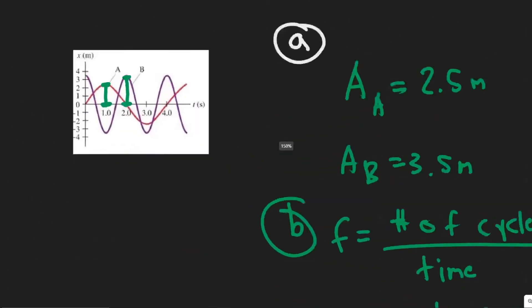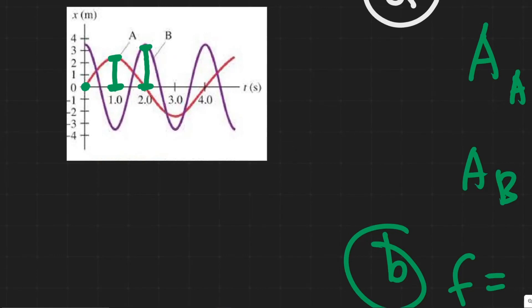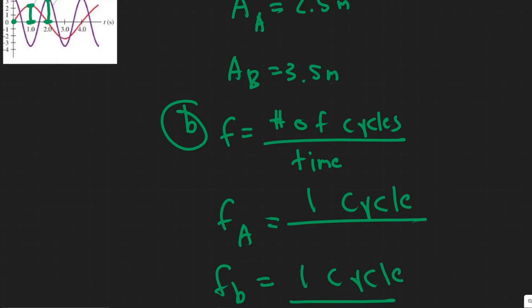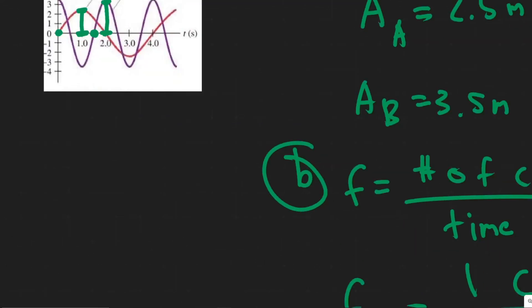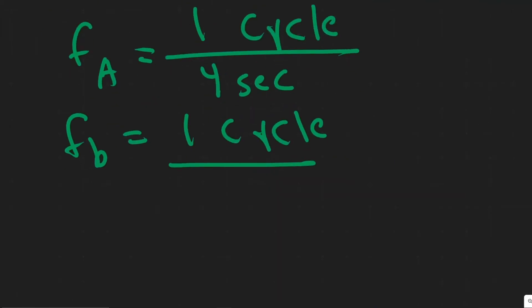So for A, one cycle is essentially the time it takes to get back to this point after going up and down. So to go through one cycle, you can see here it takes this entire time, which is four seconds. So the time would be four seconds there for A. And then for B, if you looked at it, it's probably easier to do from the top. So notice here is 1.5 seconds. And then to go up and down like this to 3.5, right? So it takes a total of two seconds for one cycle there. So this would be two seconds.